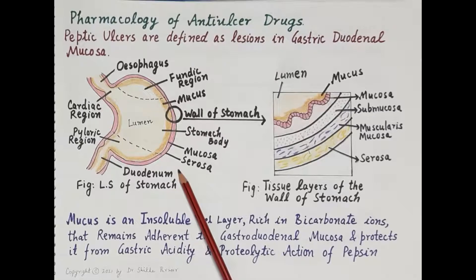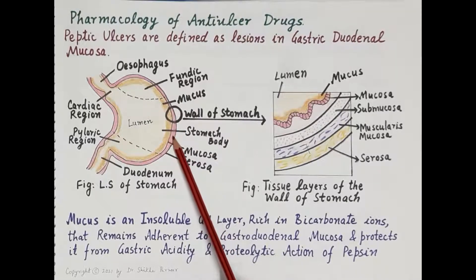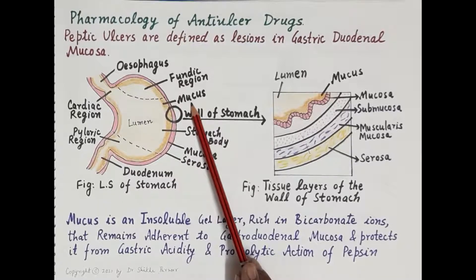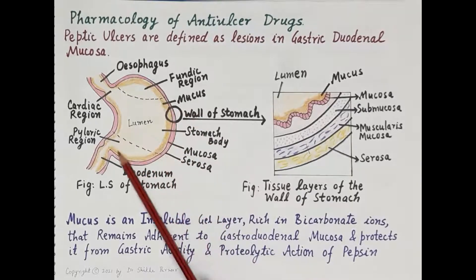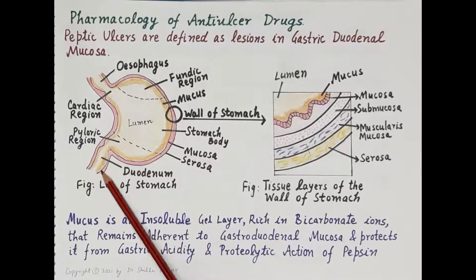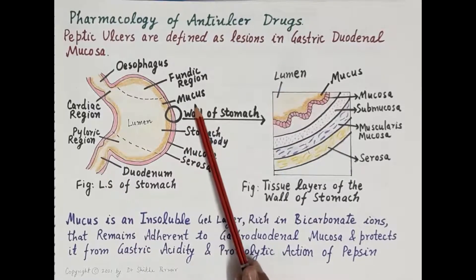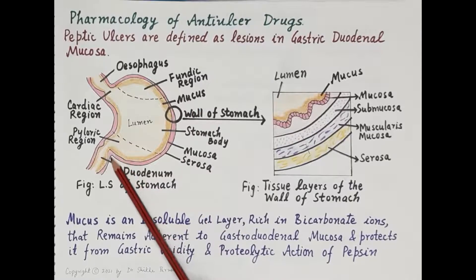The diagram also shows mucus — an insoluble gel layer that is rich in bicarbonate. This mucus remains adherent to the gastroduodenal mucosa and protects it.